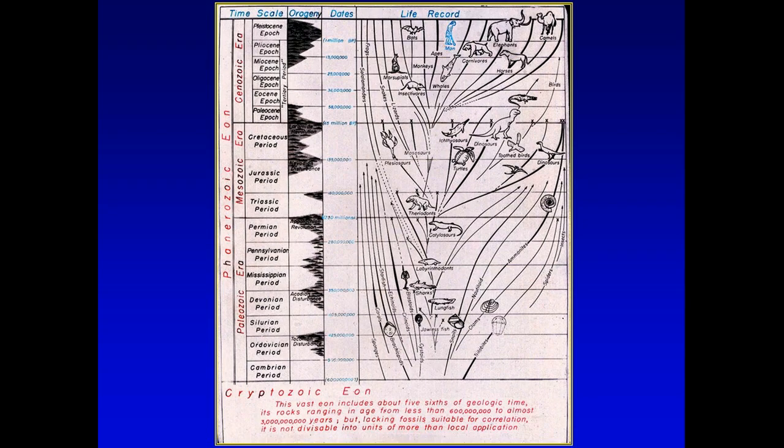We're going to talk about what's called the cryptozoic, or hidden life. A crypt is where you put something and hide it from view. A cryptic message is hidden until someone gets hold of it — then it's not cryptic anymore, it's just an insult. So anyway, here's the distinction again: in the special theory, you have variation within the kind.